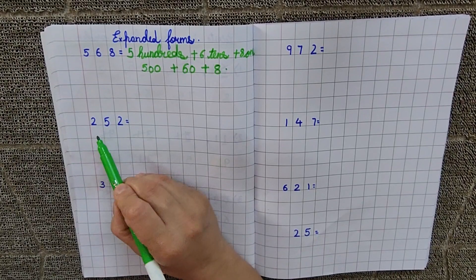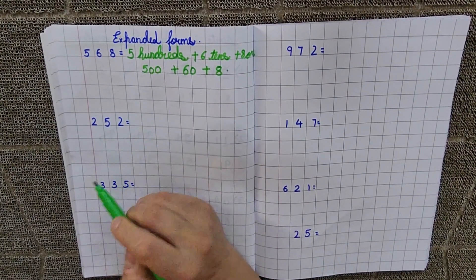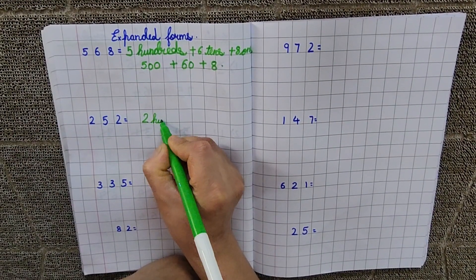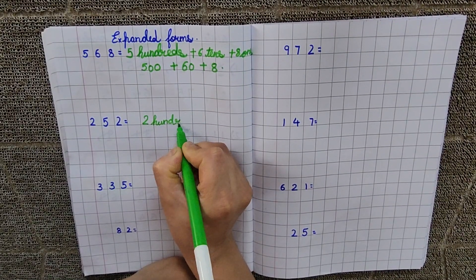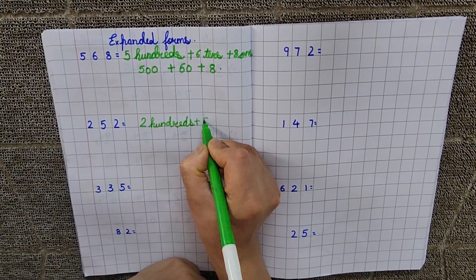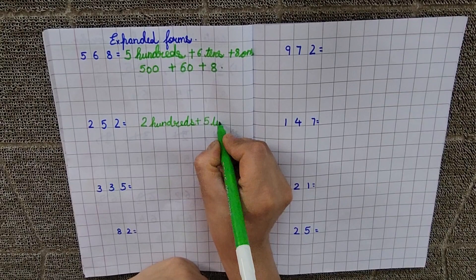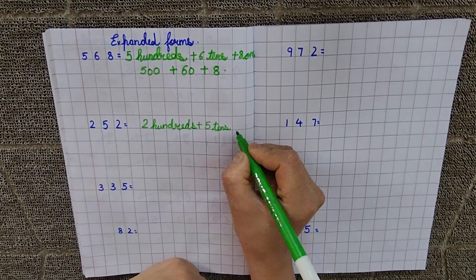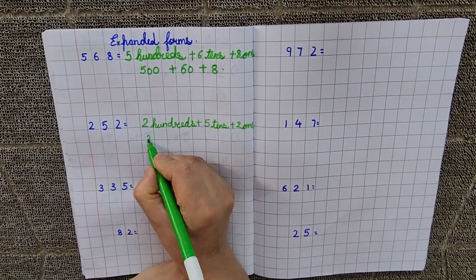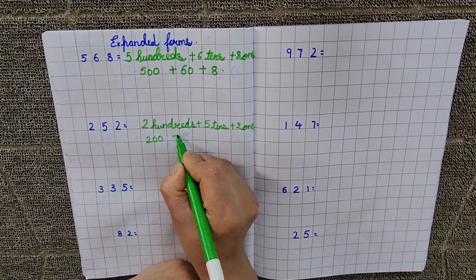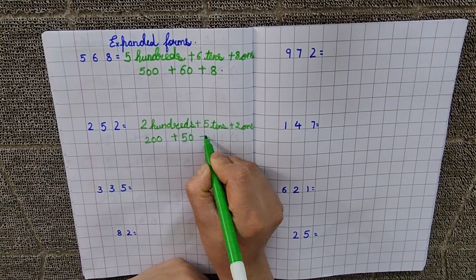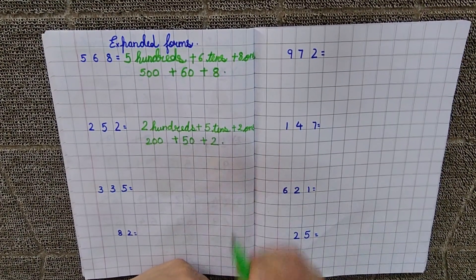Now, let's move on to the next number. 252. Now, what is the place value of 2? 2 hundreds plus 5 tens plus 2 ones. 200 plus, tens ki sat kitni zeros hoti hai? 1. And 2 ones. 2 ka 2 lag chayega. Is that clear?